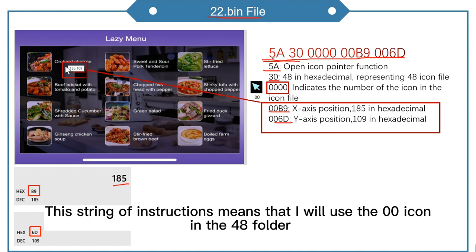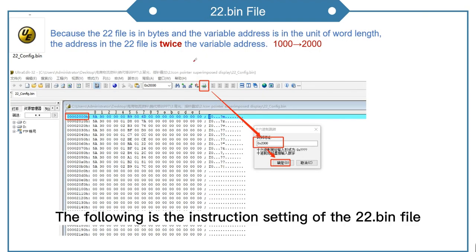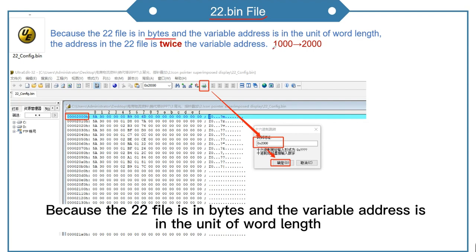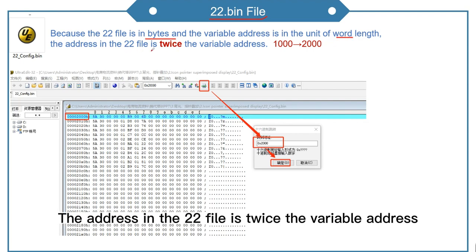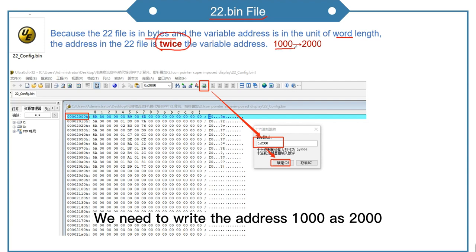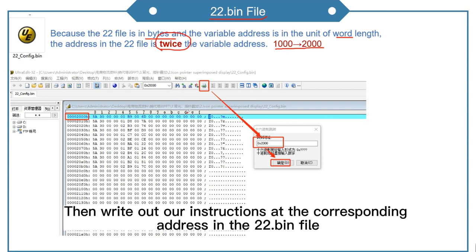The following is the instruction setting of the 22.bin file. Because the 22 file is in bytes and the variable address is in units of word length, the address in the 22 file is twice the variable address. We need to write address 1000 as 2000, then write our instructions at the corresponding address in the 22.bin file.